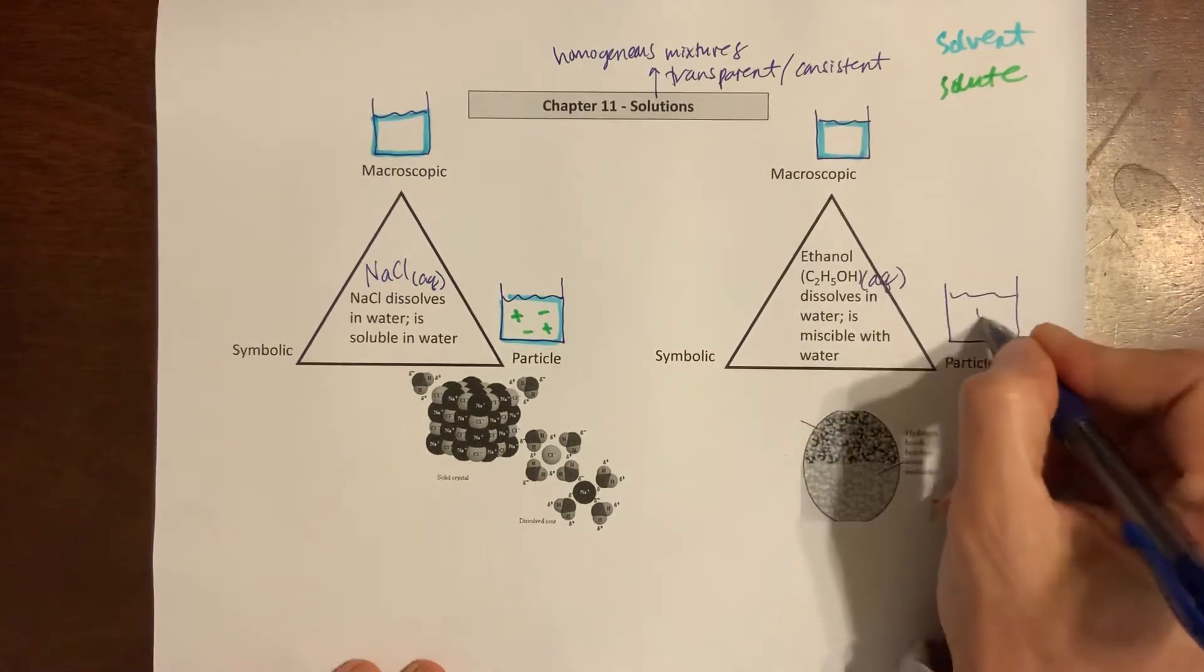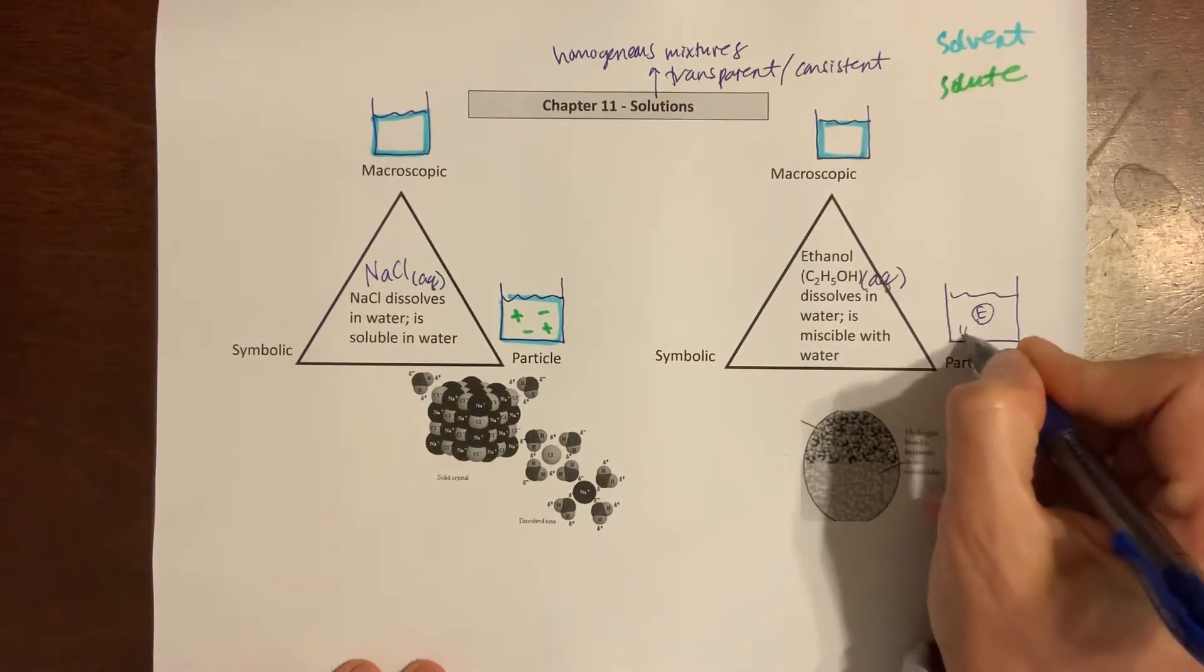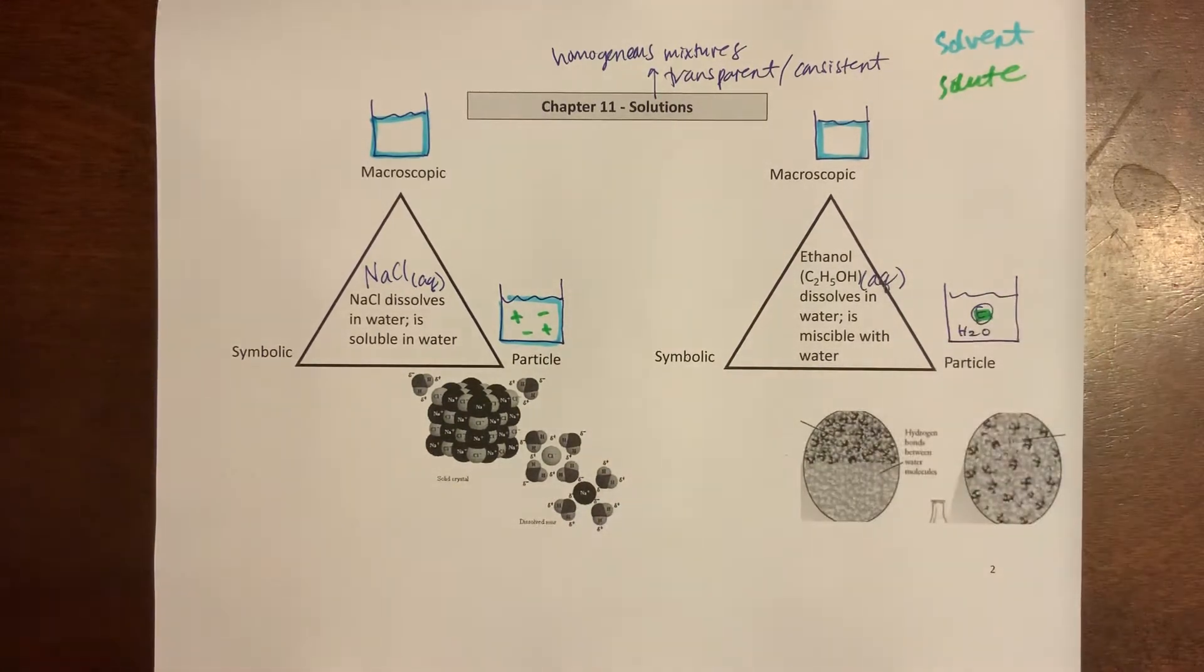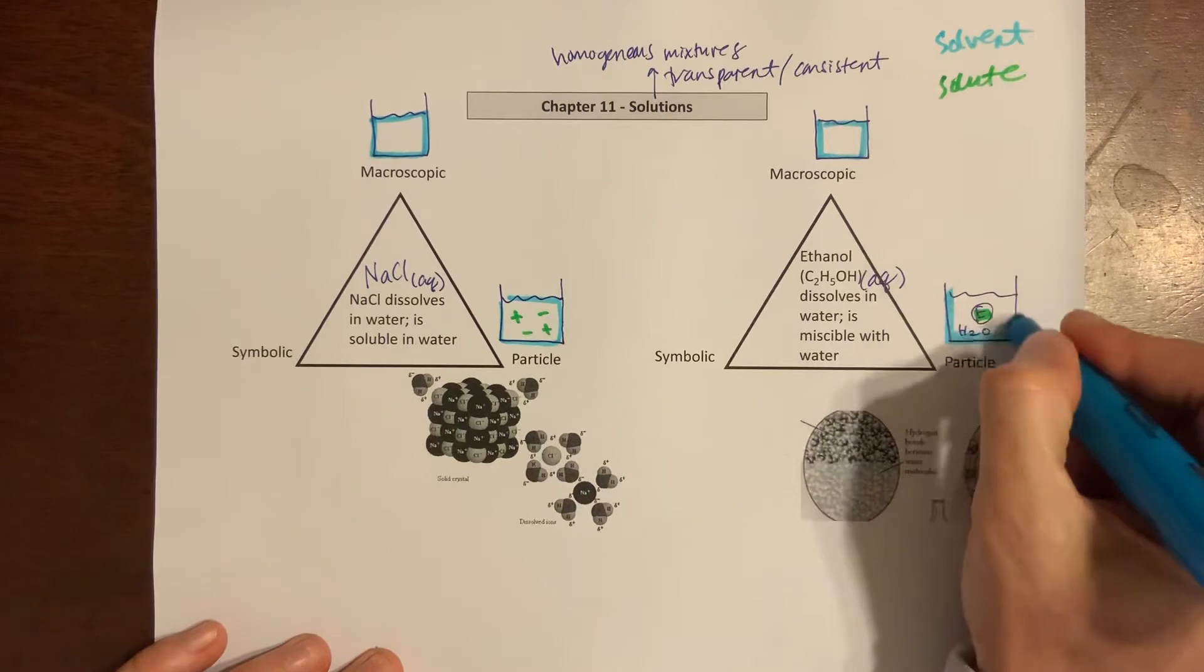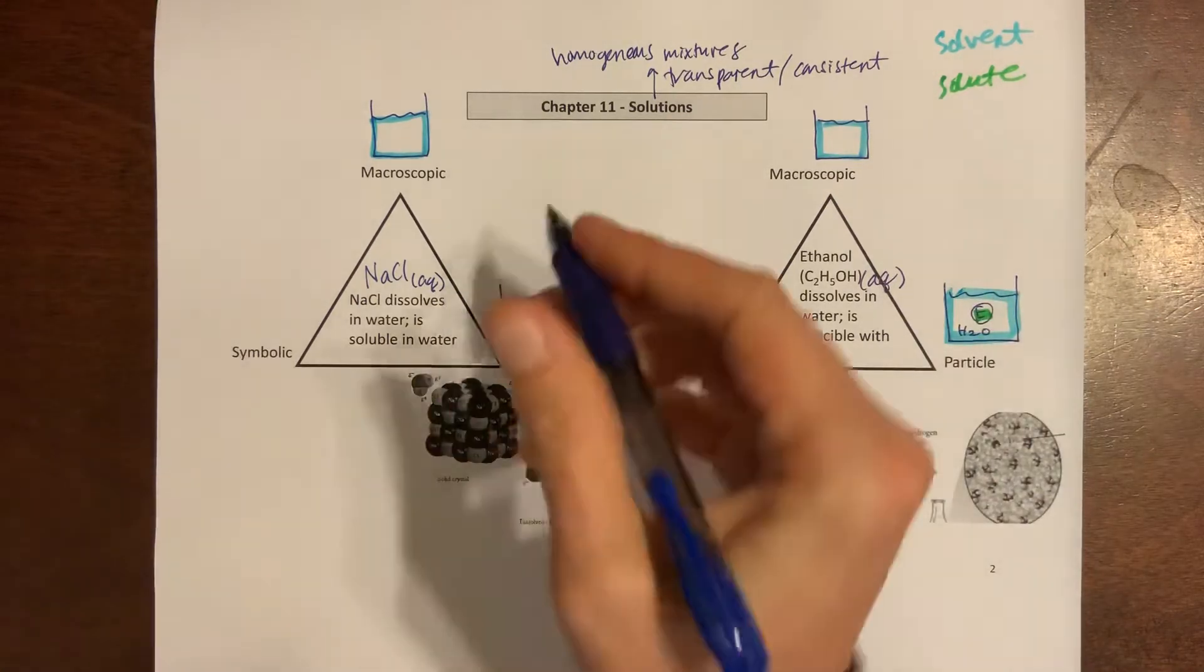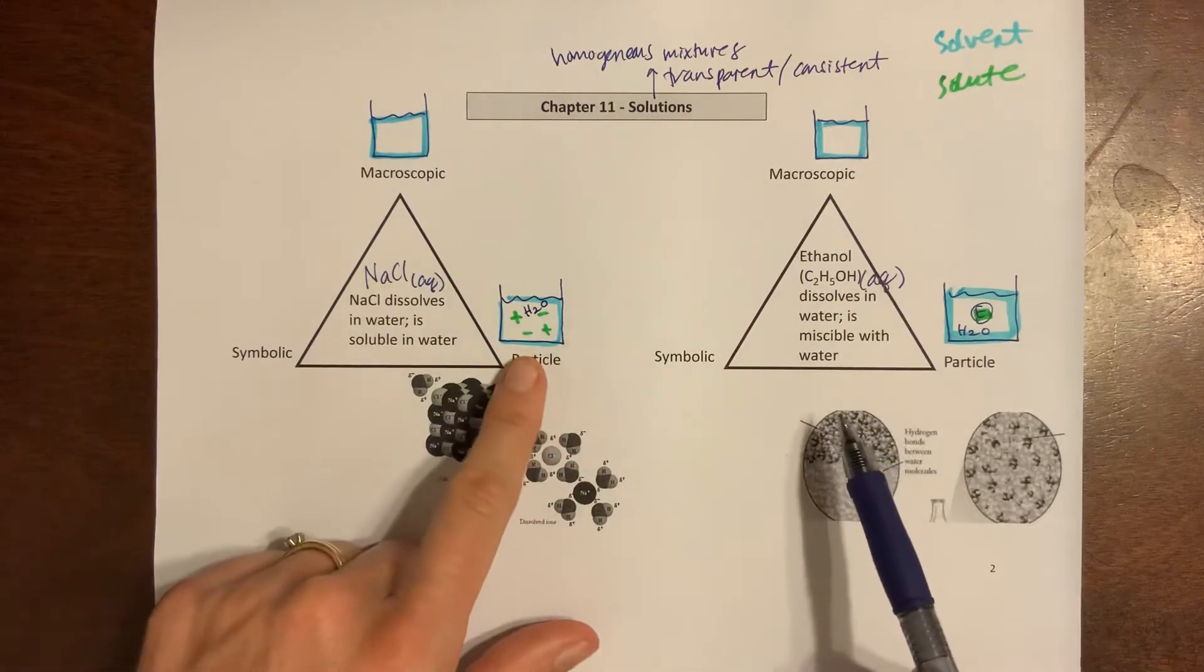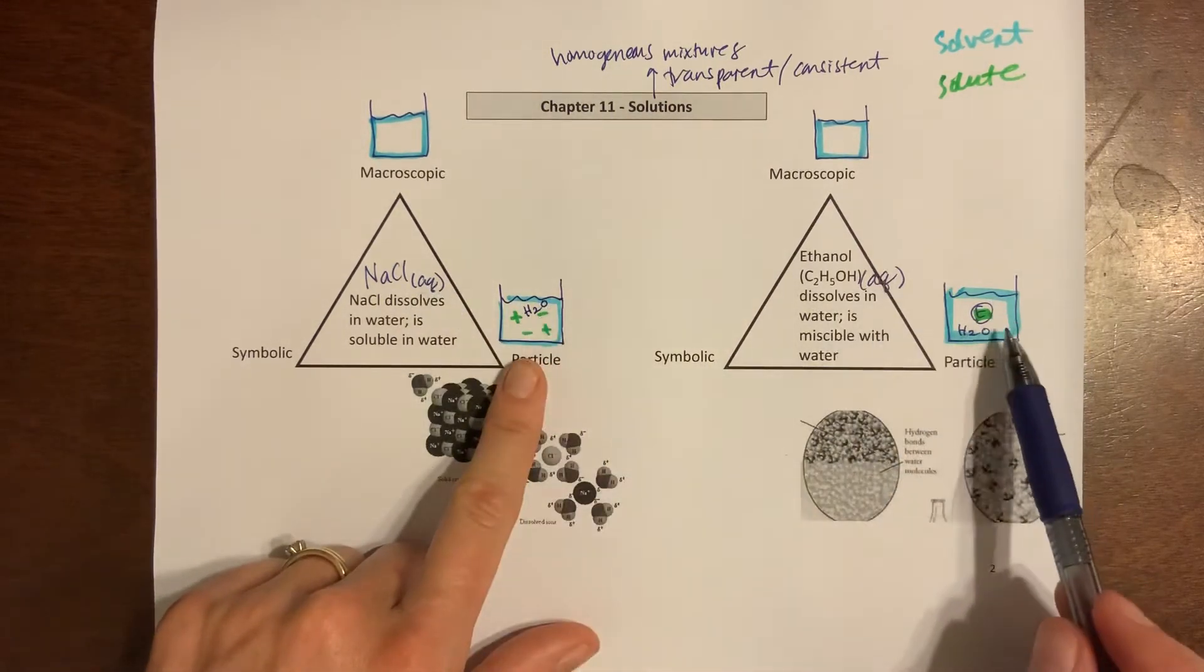In the ethanol there's no charges. This is a molecular compound so it just stays as molecules when I put it into water. I'm just going to say hey here's an ethanol without a charge on it and then I've got lots of water surrounding it. I could throw some water in here as well. At a particle level I would see charges in the sodium chloride and I would not in the ethanol.